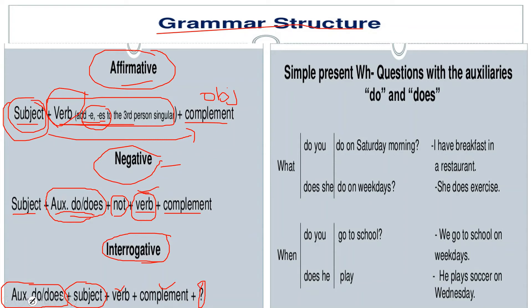You need to understand again that with 'do' or 'does' we do not use -s or -es with the verb. If we are making a question with WH-words, with WH-words we always use 'do' or 'does.'